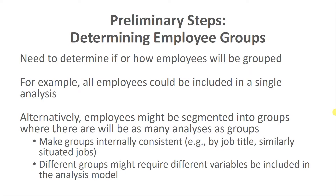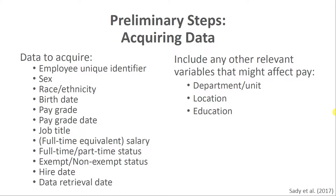When acquiring data, Sadie and colleagues recommend having the following information available: a unique employee identifier, sex, race, ethnicity, and other protected class variables, birth date, pay grade, pay grade date — meaning how long they've been in that pay grade — job title, full-time equivalent salary on a monthly or annual basis, full-time or part-time status, exempt or non-exempt status, and hire date. For all data gathered, it's important to include a data retrieval date so we know how current the data are.